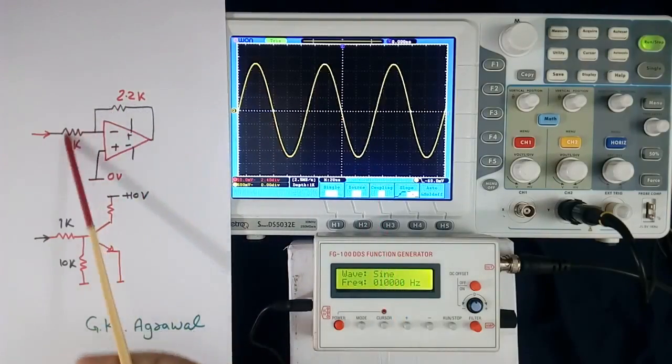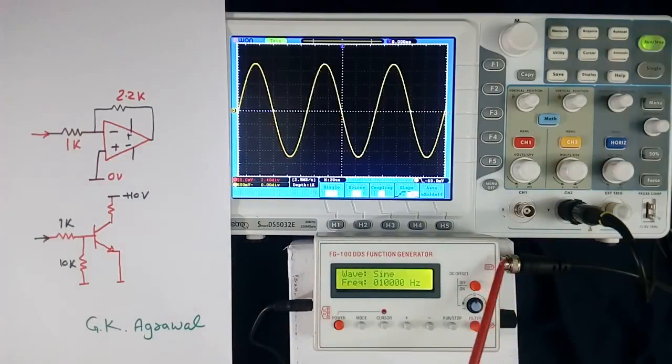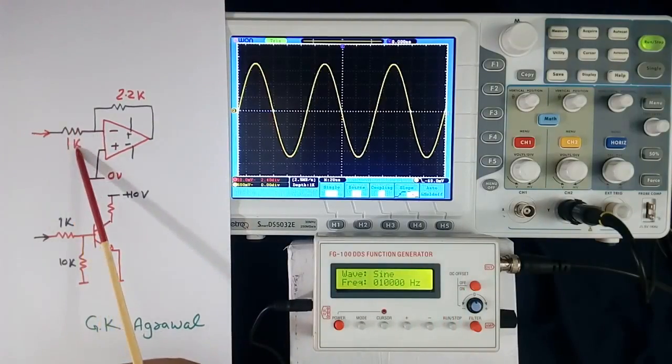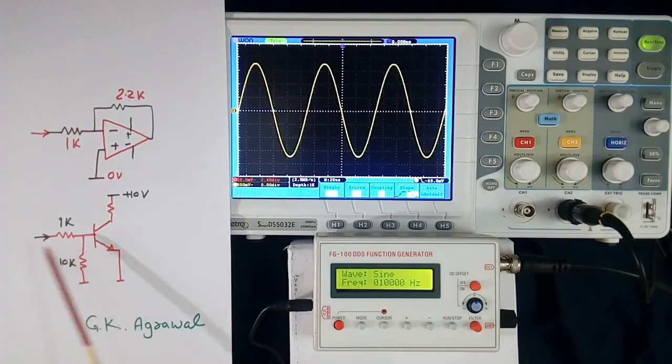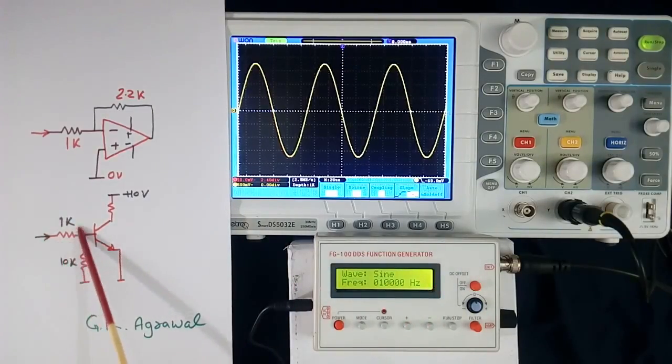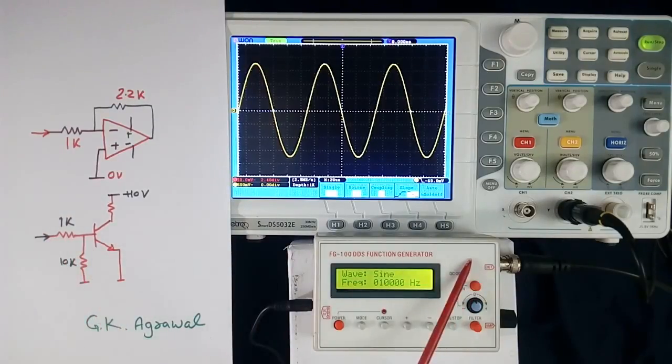Now suppose this is the circuit, where this output will go say here, then this function generator will see load as 1 kOhm. Similarly here, if function generator is to be connected here, then this function generator will see load as 1 kOhm. So we will connect.